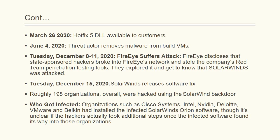Roughly 198 organizations were hacked using the SolarWinds backdoor. Among those infected were very big names — organizations such as Cisco Systems, Intel, NVIDIA, VMware, and Belkin, all of which had installed the infected SolarWinds Orion software, though it's unclear whether the hackers actually took additional steps once the infected software found its way into those organizations.